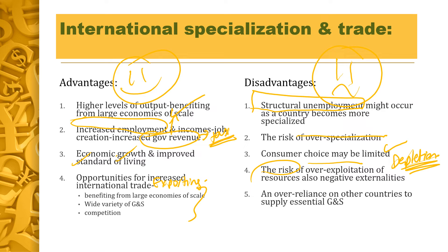Over-exploitation would lead to depletion of resources — they use all the resources of the country. Also, it might create negative externalities such as pollution. Finally, an over-reliance on other countries to supply essential goods and services means this could increase the gap between rich and poor, since developed economies will dominate the global demand for natural resources.